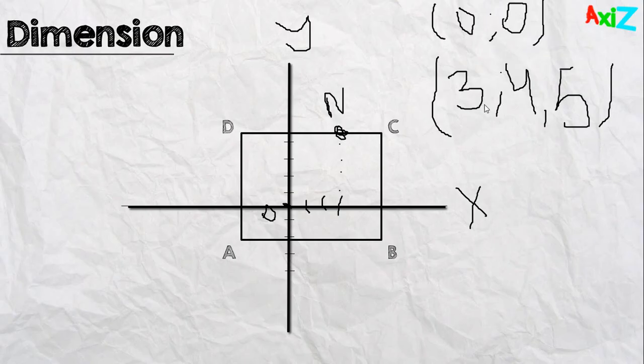If we get these two numbers, we will know the exact location of point N. It's 3 on the right and 4.5 up. If the numbers were negative, it would be 3 on the left and 4.5 down. So, that's it.